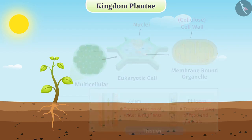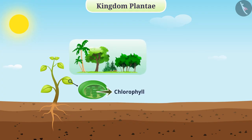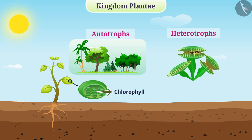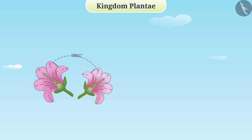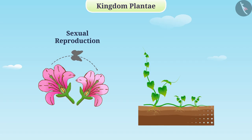Due to the presence of chlorophyll, most organisms in this class are autotrophic, but some of these organisms are also heterotrophs. Some of these organisms produce offspring from sexual reproduction and some from asexual reproduction.